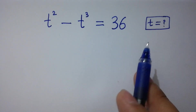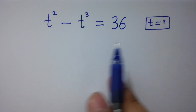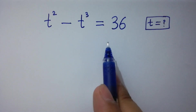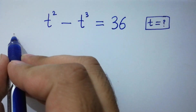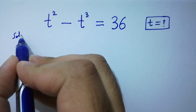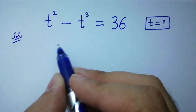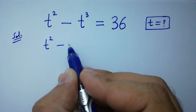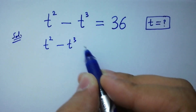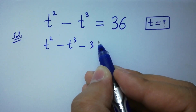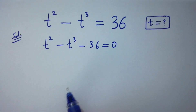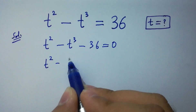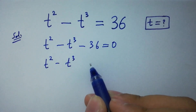Hello friends, find the value of t if t-squared minus t-cubed equals 36. Let's have a solution. It can be written as t-squared minus t-cubed minus 36 equal to 0.